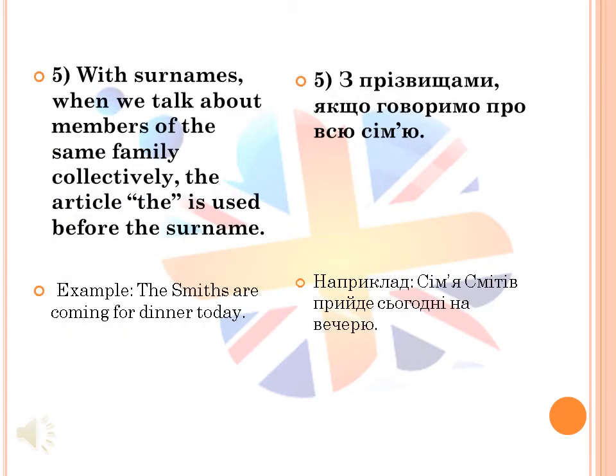We use definite article the with surnames when we talk about members of the same family collectively. The article the is used before the surname. For example: 'The Smiths are coming for dinner today.'